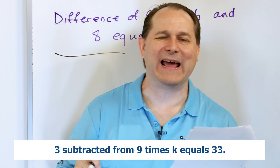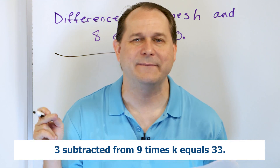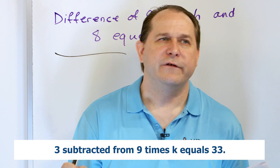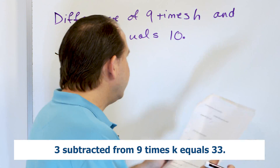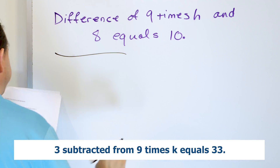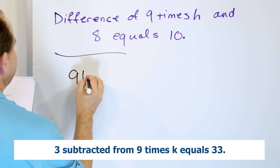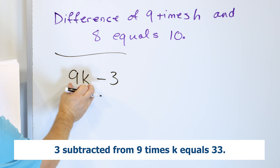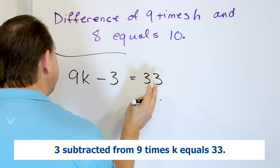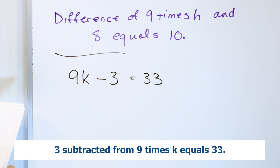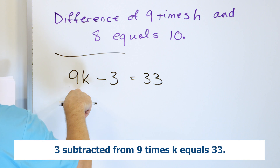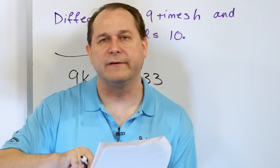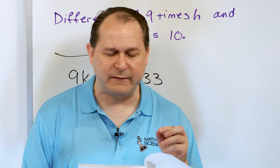Three subtracted from nine times K is equal to 33. The three is subtracted from something else, so you don't put the three first. What are we subtracting from? Nine times K — that comes first, then we subtract three from it: 9K − 3 = 33. The common mistake is writing three minus nine K, but that's wrong because the three is being subtracted from nine times K, so that quantity must be written first.